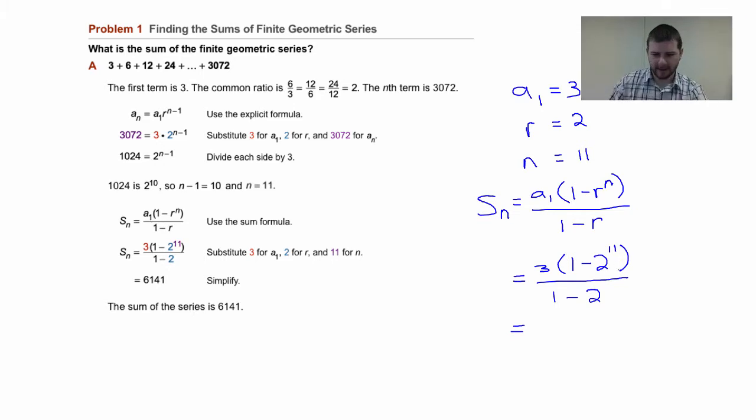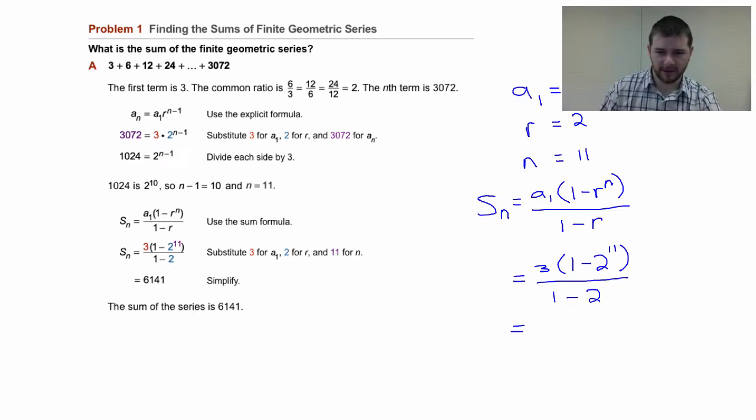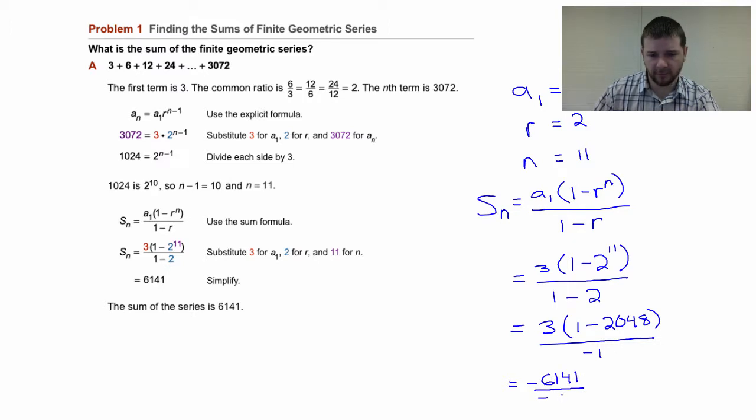So this will equal 3 times 1 minus 2 raised to the 11th power over 1 minus 2. Continuing to simplify, 1 minus 2 to the 11th power times 3 is some quick work on a calculator. I just recalled knowing 2 to the 10th power is 1024 would mean 2 to the 11th power is just 2 times that. So I can rewrite this as 3 times 1 minus 1024 times 2, 2048, over negative 1, which now equals, now I'll get the calculator out, so this equals negative 6141 over negative 1, and that of course is 6141, the sum of our geometric series.